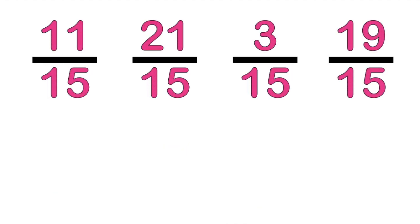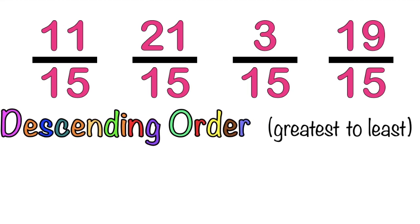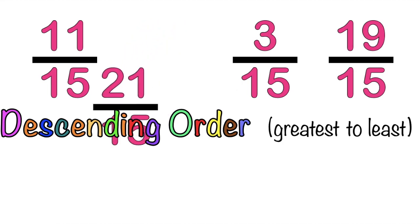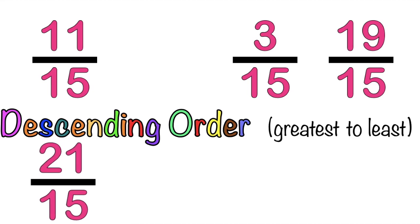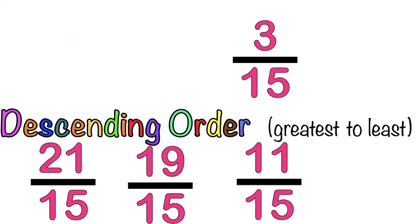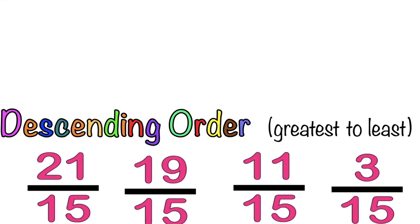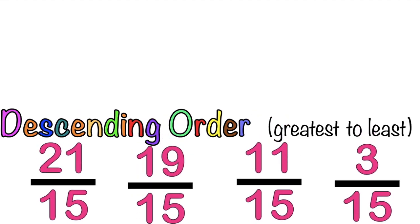How about this one? Let's arrange this in descending order, or from greatest to least. Which of these fractions is the greatest? It's 21-fifteenths. The next one is 19-fifteenths. The next one is 11-fifteenths. And lastly, we have 3-fifteenths. This fraction is arranged in descending order.